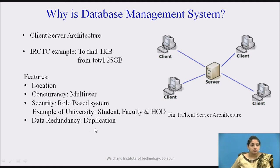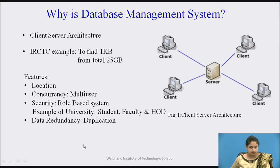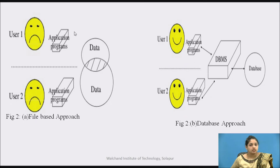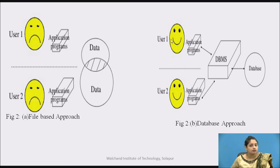Next is data redundancy, which is nothing but data duplication. For example, a lab assistant and an office administrator may both store the same data for a particular student. As seen in the diagram, on the left side — the file-based approach — the same data is stored by two different users using two different applications. On the right side — the database approach — there is one single database common to both users, and both access it using one DBMS software, so data is stored only once. This eliminates data redundancy.